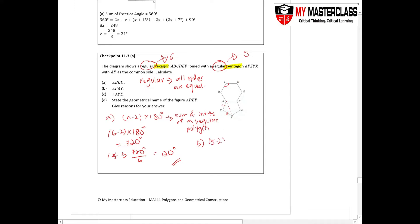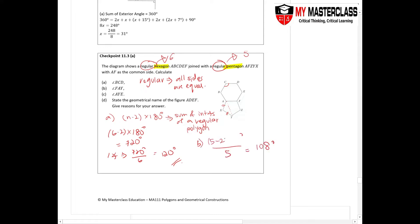For the pentagon, we have a five-sided figure, so: (5 − 2) × 180° ÷ 5 = 108°. So each interior angle of the regular pentagon is 108°. This means triangle AXY is an isosceles triangle, and angle AXY = 108°.